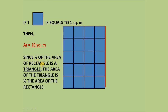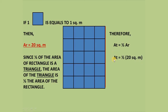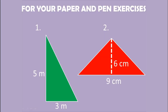Since the area of the triangle is equal to one half of the area of the rectangle, the area of the triangle equals one half times 20 square meters, which equals 10 square meters.